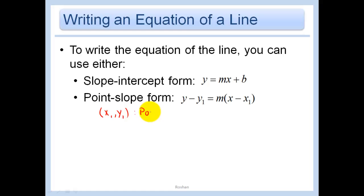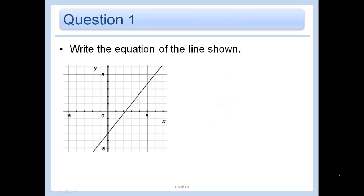Write the equation of the line shown. Alright, let's first use y equals mx plus b to do this. It's quite obvious here that our y-intercept is 1, 2, 3, so we have the point 0, negative 3. In other words, b is negative 3.